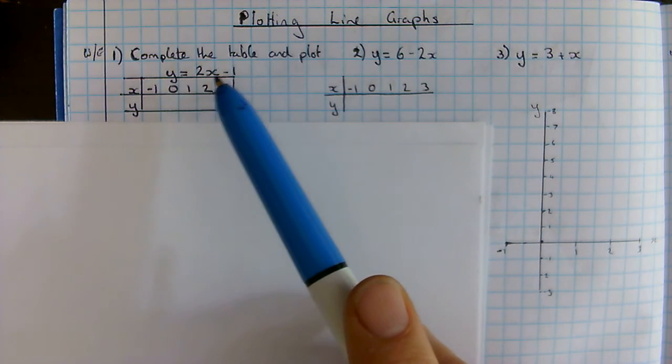We're going to try to do the same for number 2: y equals 6 take away 2x. Again, I'm going to start with x equals 0. Y equals 6 take away 2x. I'm going to start by saying x equals 0, so y equals 6 take away 2 times 0. Remember, we've got to use BIDMAS—we always use BIDMAS. I start by doing my multiplication: 2 times nothing is nothing, so it's 6 take away nothing, which is 6.